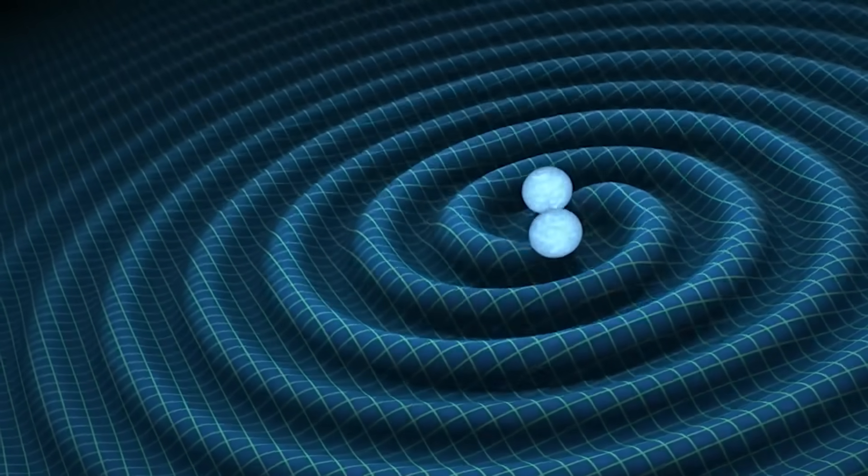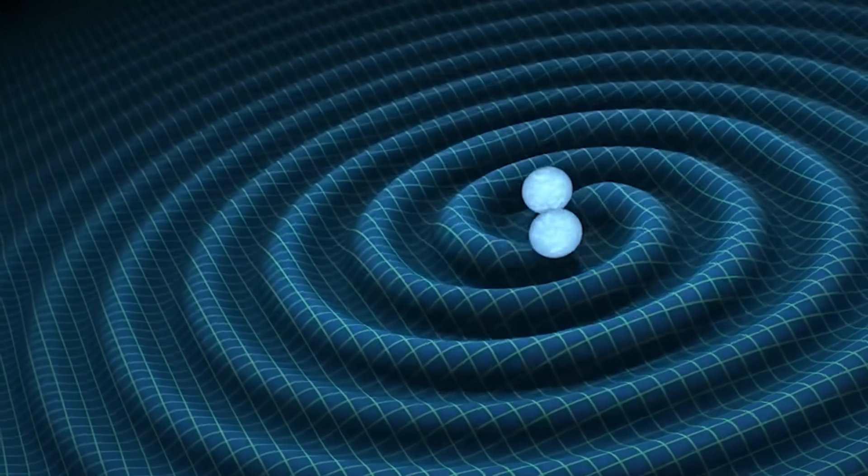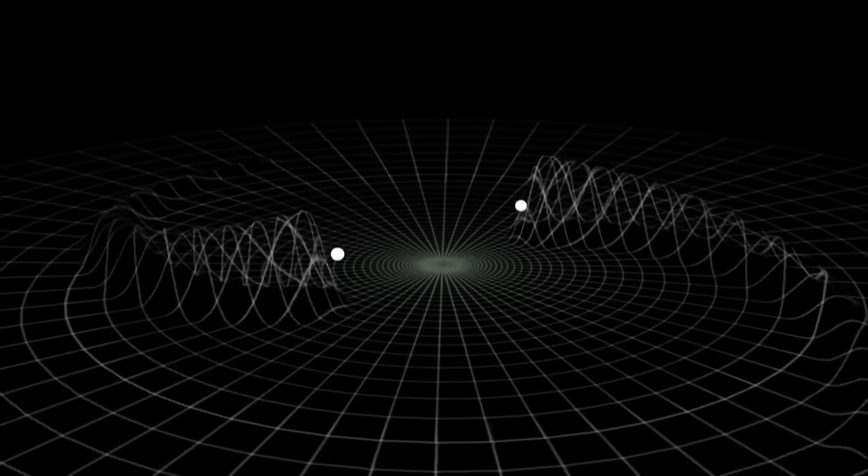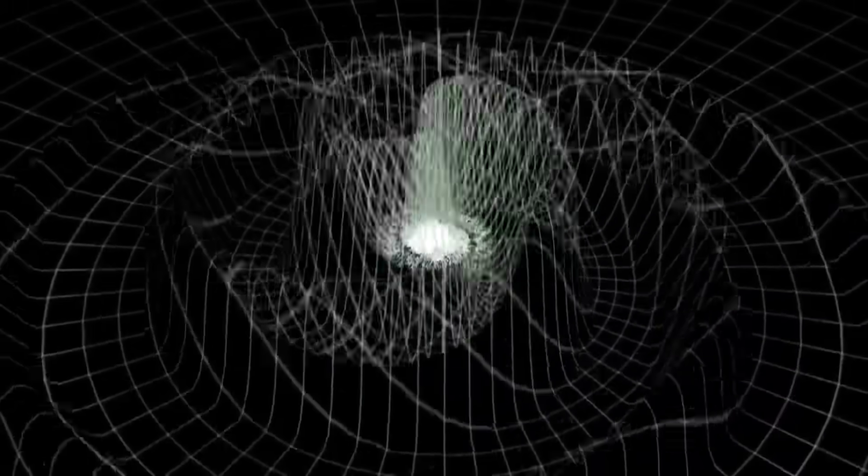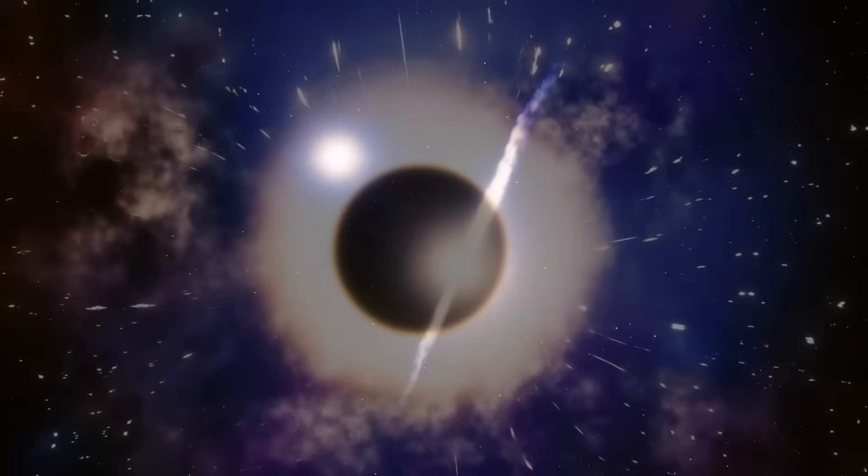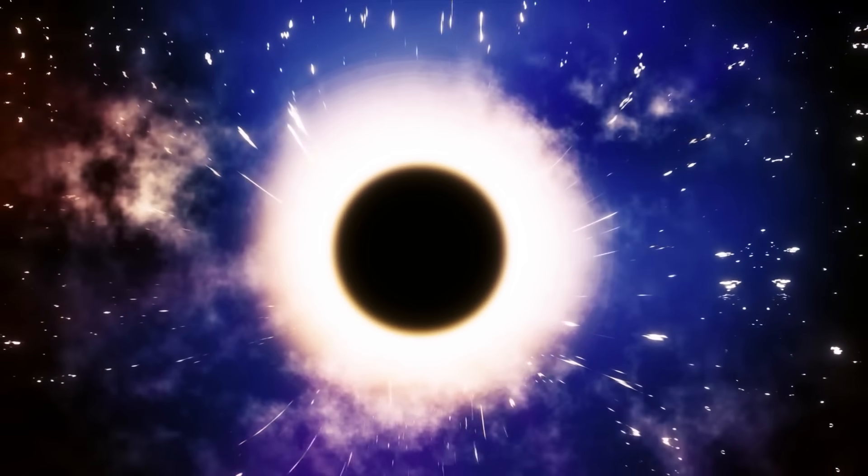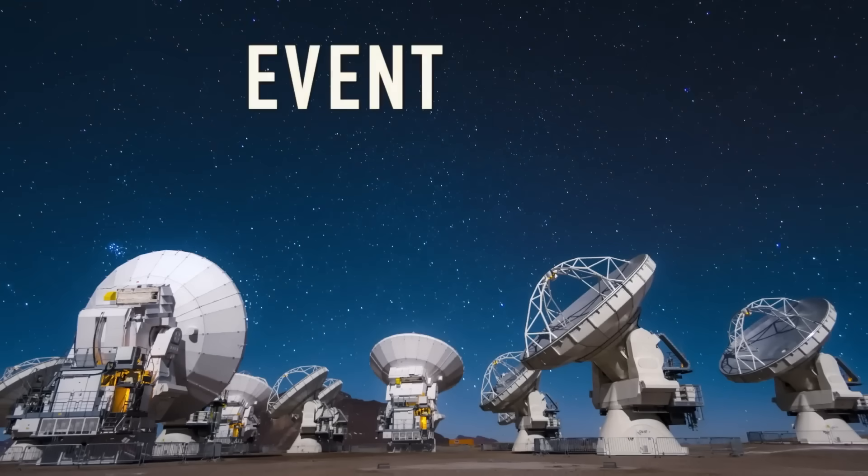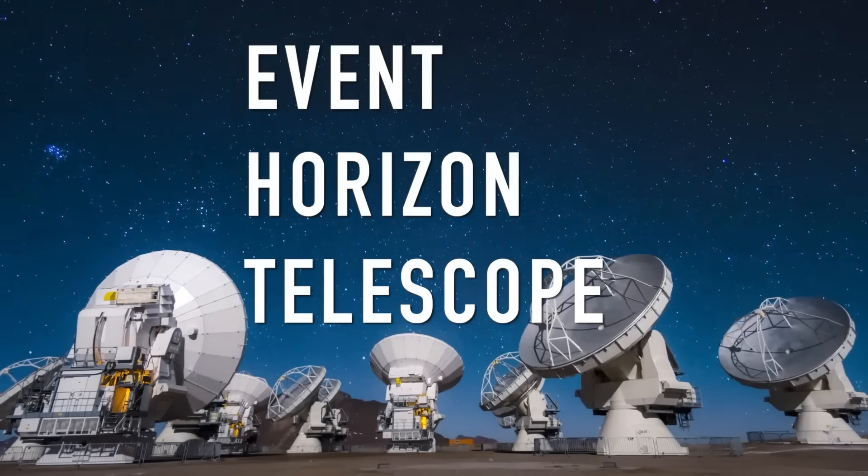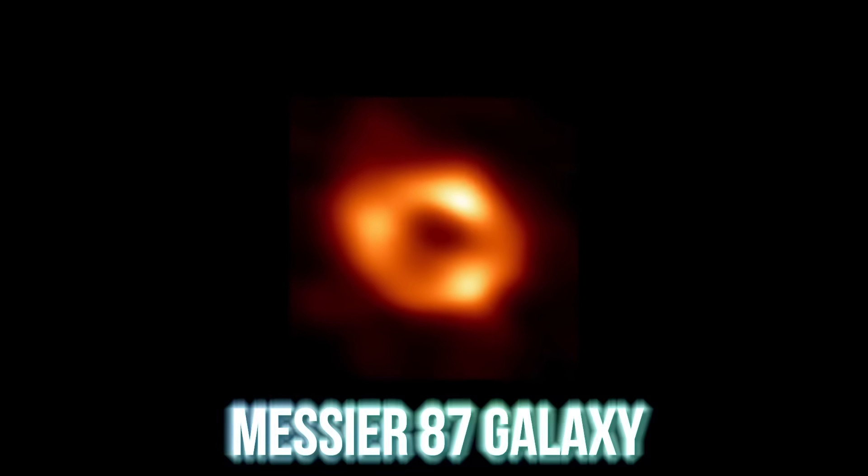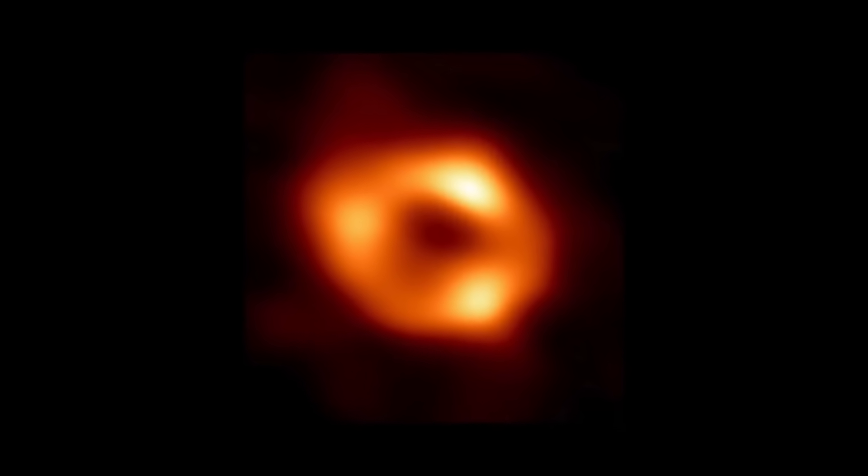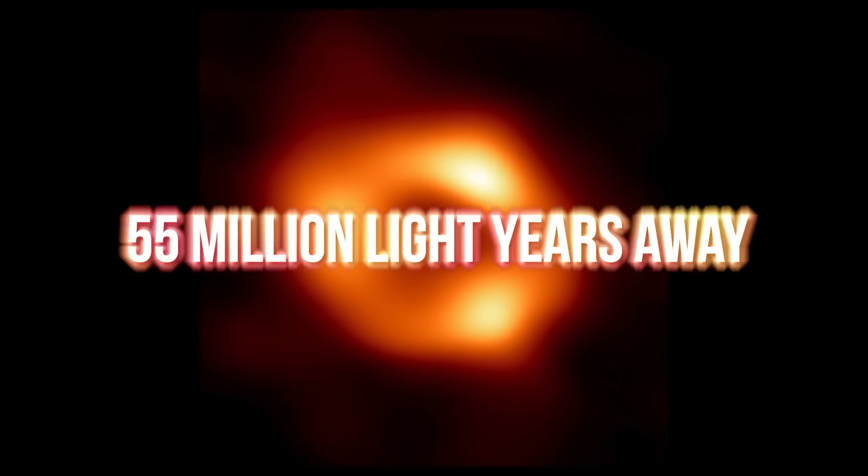We can detect black holes by observing their effects on the surrounding environment, such as their ability to attract gas, dust, and stars, causing them to heat up and emit radiation. This radiation can be detected as heat images. In April 2019, the Event Horizon Telescope, composed of eight ground-based radio telescopes, captured the first-ever image of a black hole and its shadow in the Messier 87 galaxy, located 55 million light-years away from Earth.